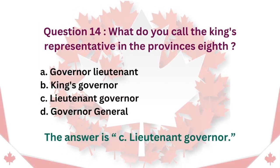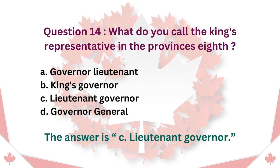Question 14: What do you call the King's representative in the province? A. Governor-Lieutenant. B. King's Governor. C. Lieutenant Governor. D. Governor General. The answer is C. Lieutenant Governor.